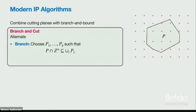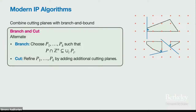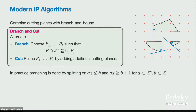In branching, we start with polytope P and break it into sub-polytopes such that every integer point is contained in one of them — for example, P1, P2, P3. Then we do the second step, cutting: we refine each polytope by including additional CG cuts. We keep doing this until we find an integer solution or run out of points and it's unsatisfiable.